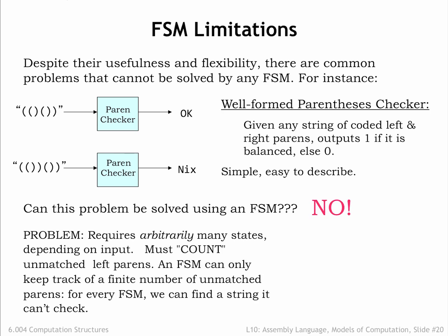No, it can't. The difficulty is that the FSM uses its internal state to encode what it knows about the history of the inputs. In the paren checker, the FSM would need to count the number of unbalanced open parens seen so far, so it can determine if future input contains the required number of closed parens. But in a finite state machine there are only a fixed number of states, so a particular FSM has a maximum count it can reach. If we feed the FSM an input with more open parens than it has states to count, it won't be able to check if the input string is well-formed. The finiteness of FSMs limits their ability to solve problems that require unbounded counting.